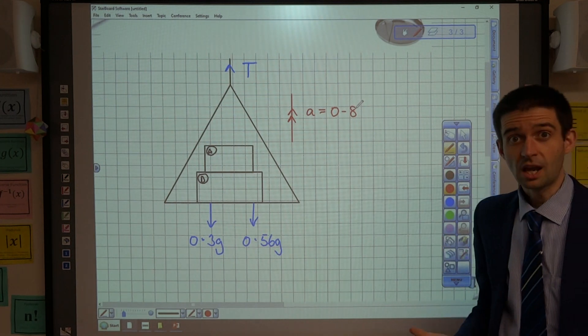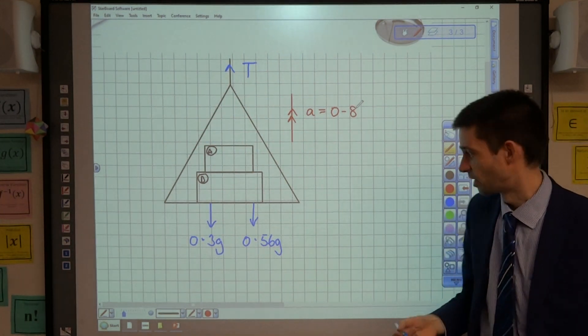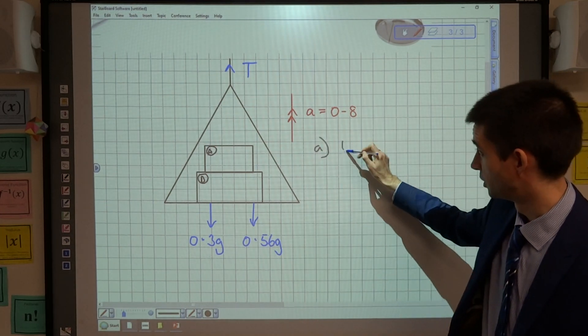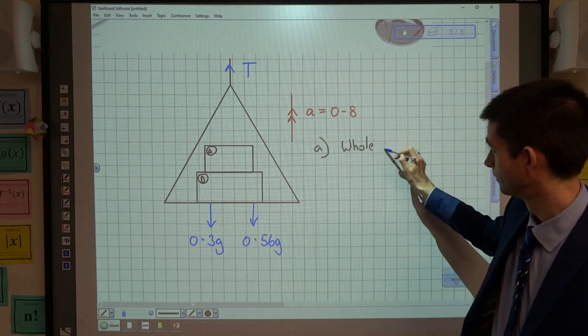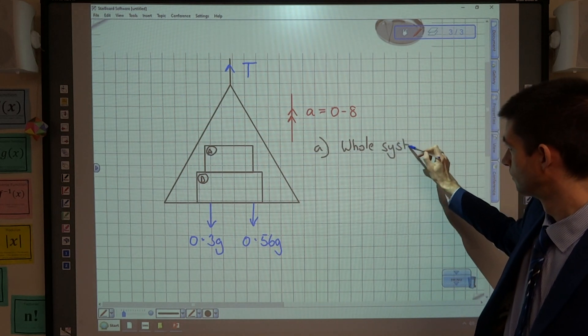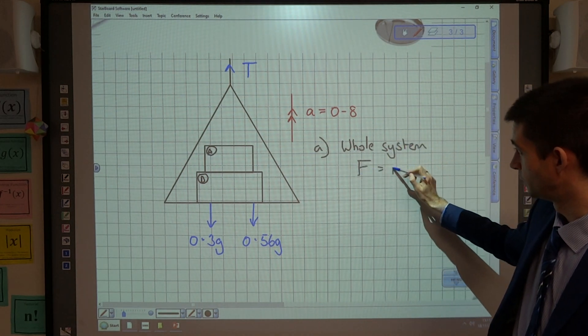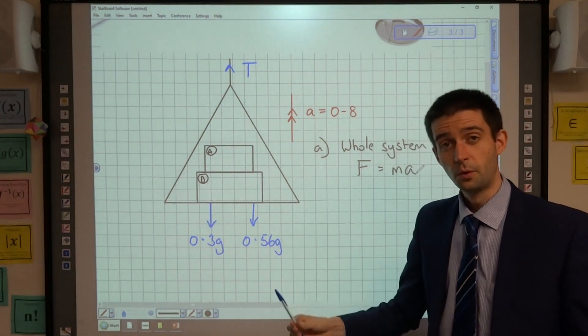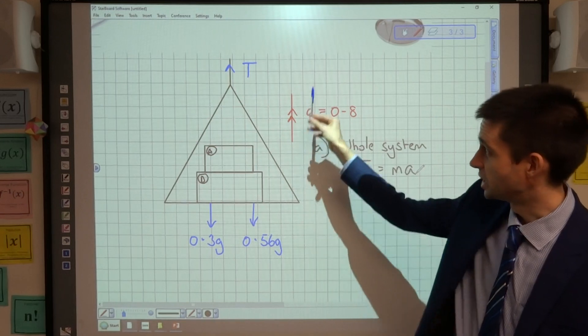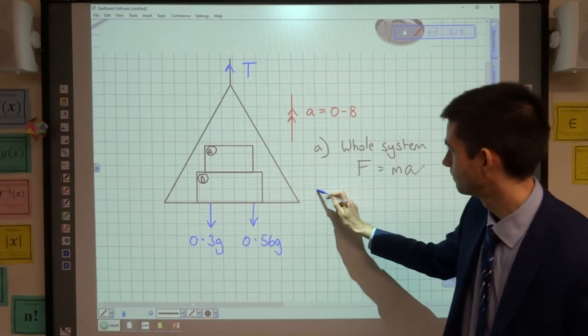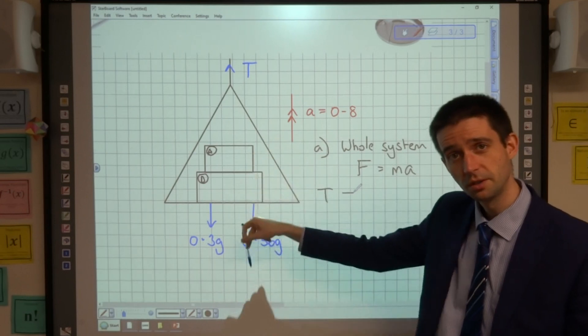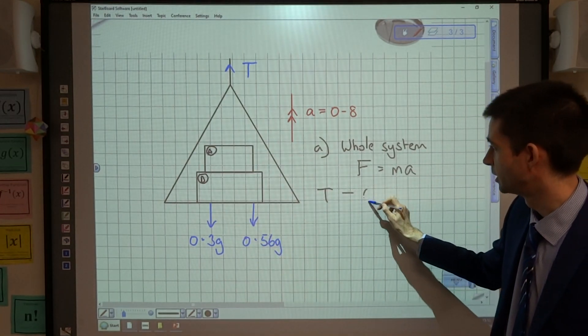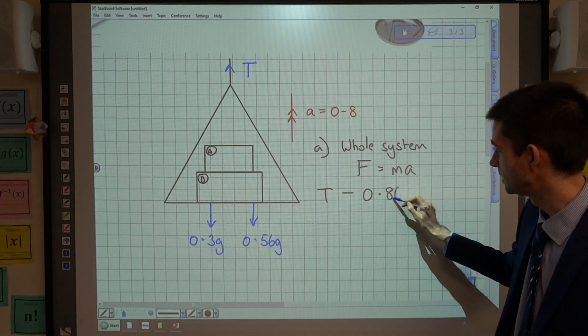And in part A, I'm being asked to find the tension in the string. Now for part A, I'm going to resolve for the whole system using resultant force equals mass times acceleration. So forces acting in the direction of motion, which is upwards, are just T. And the forces opposing the motion, acting in the opposite direction, are both of these two weights. So I'm going to combine them to be 0.86 G.